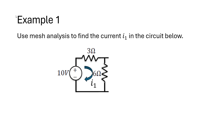Let's start with example one. We're asked to use mesh analysis to find current I1 in the circuit shown. This example looks like something you could solve just by combining resistors and using Ohm's law — and yes, that's true — but let's go ahead and try solving for I1 using the mesh analysis technique. I encourage you to pause the video and try this example yourself.